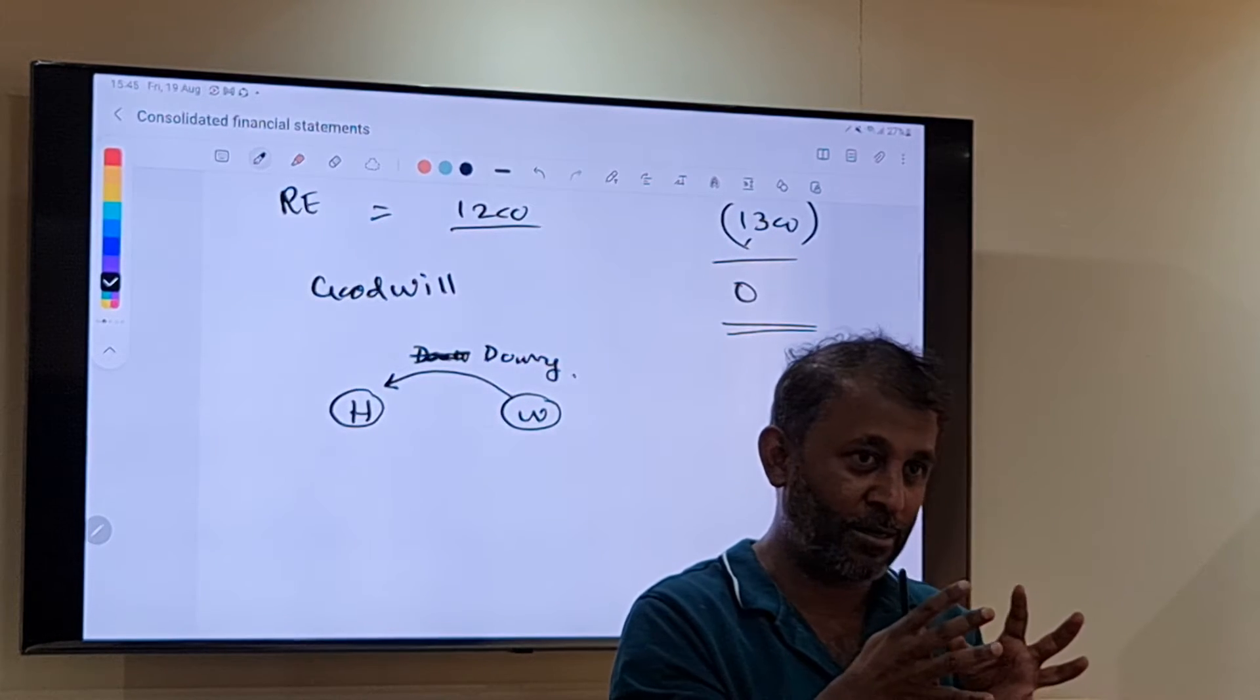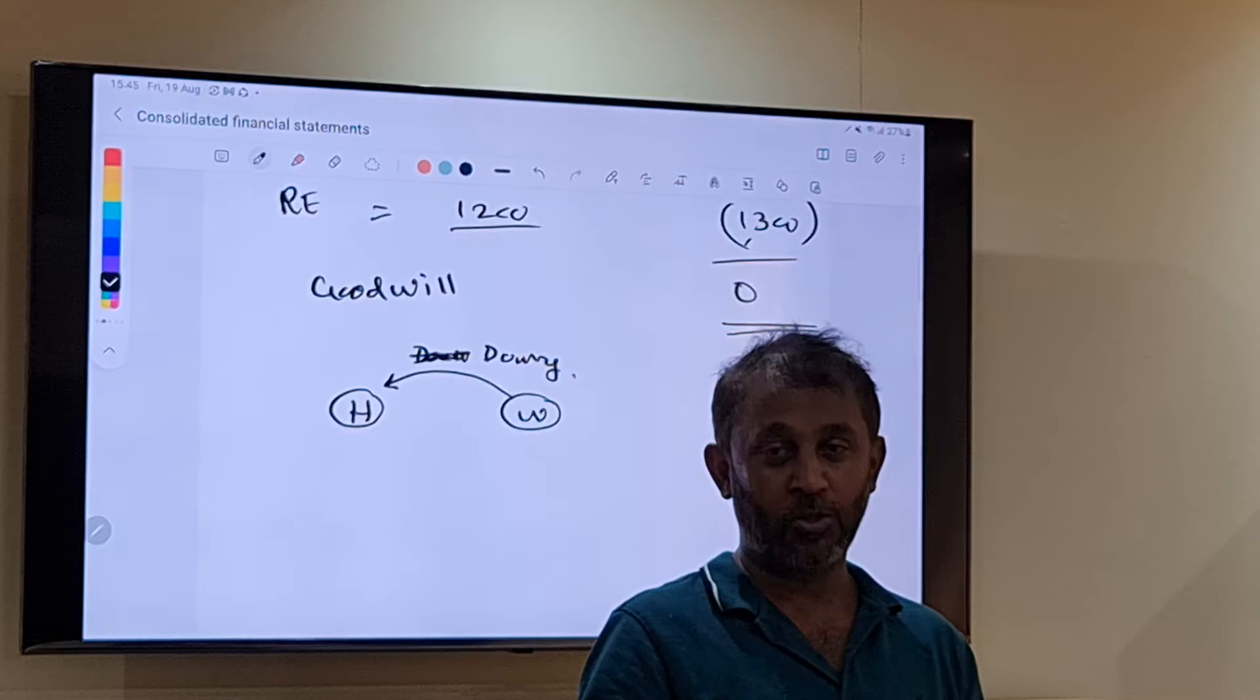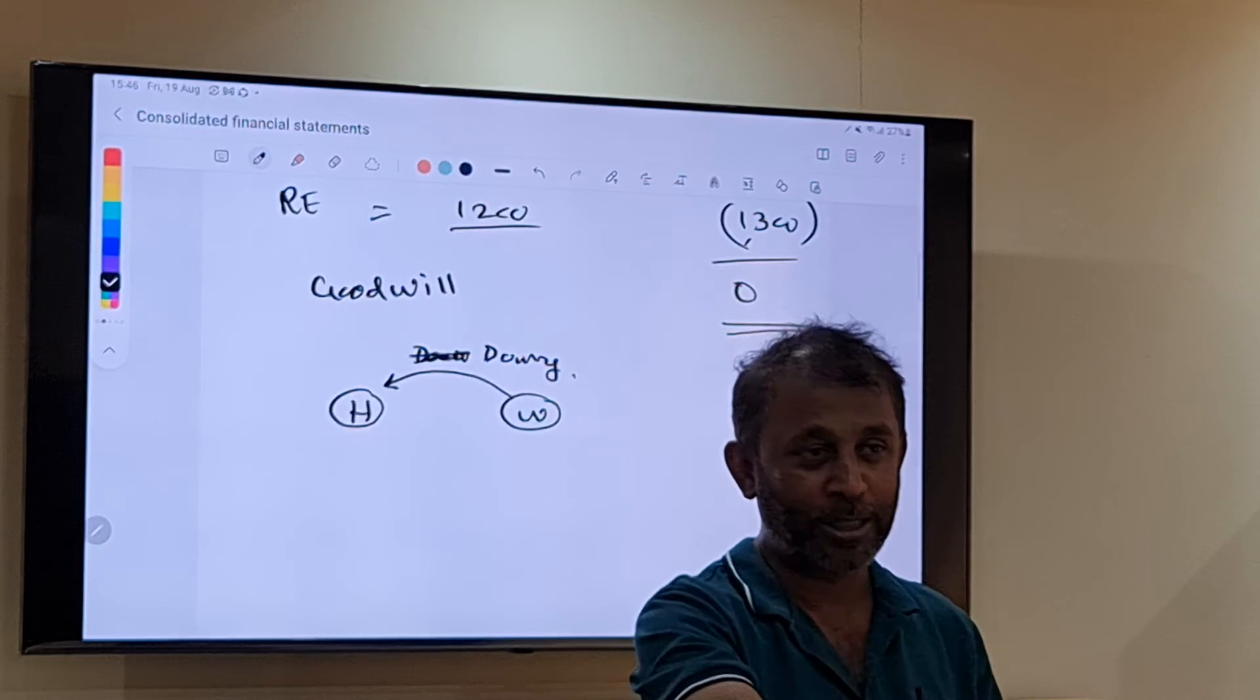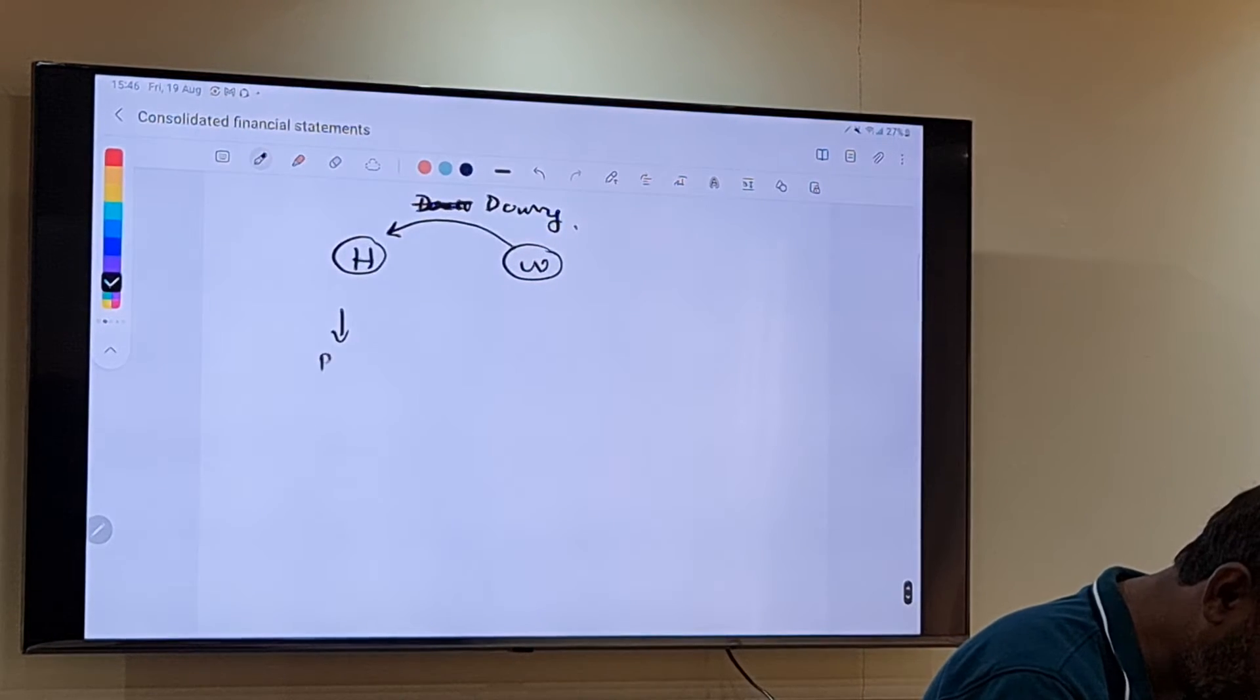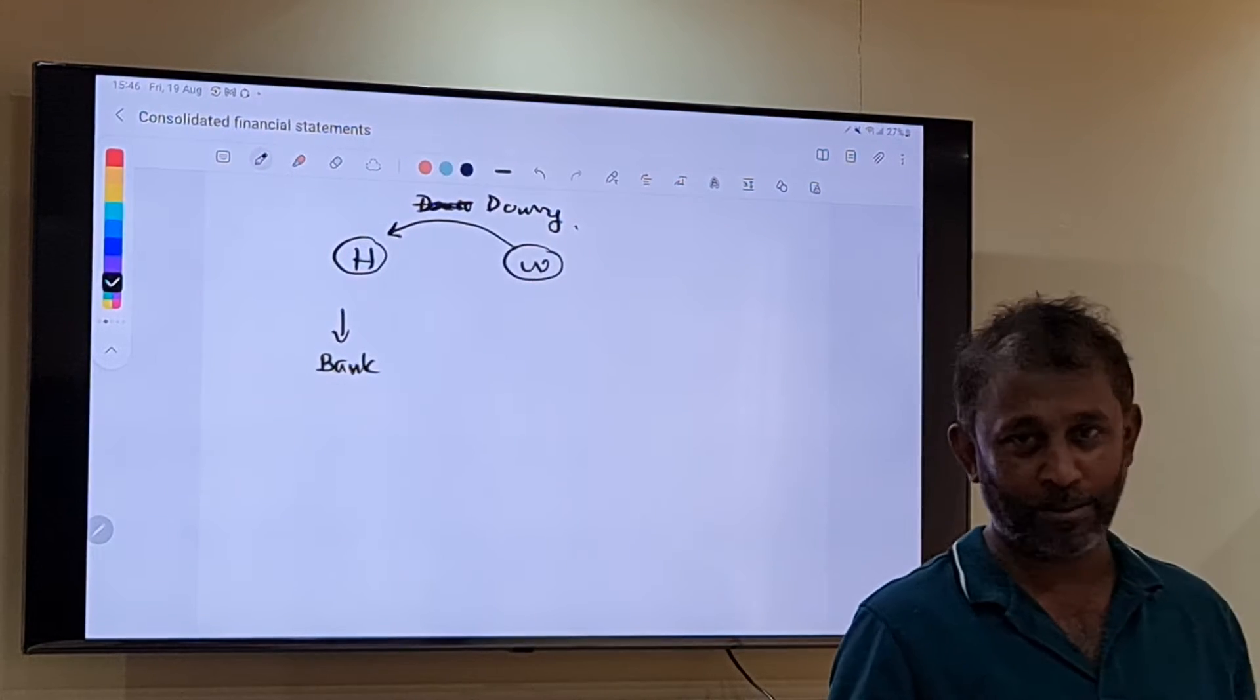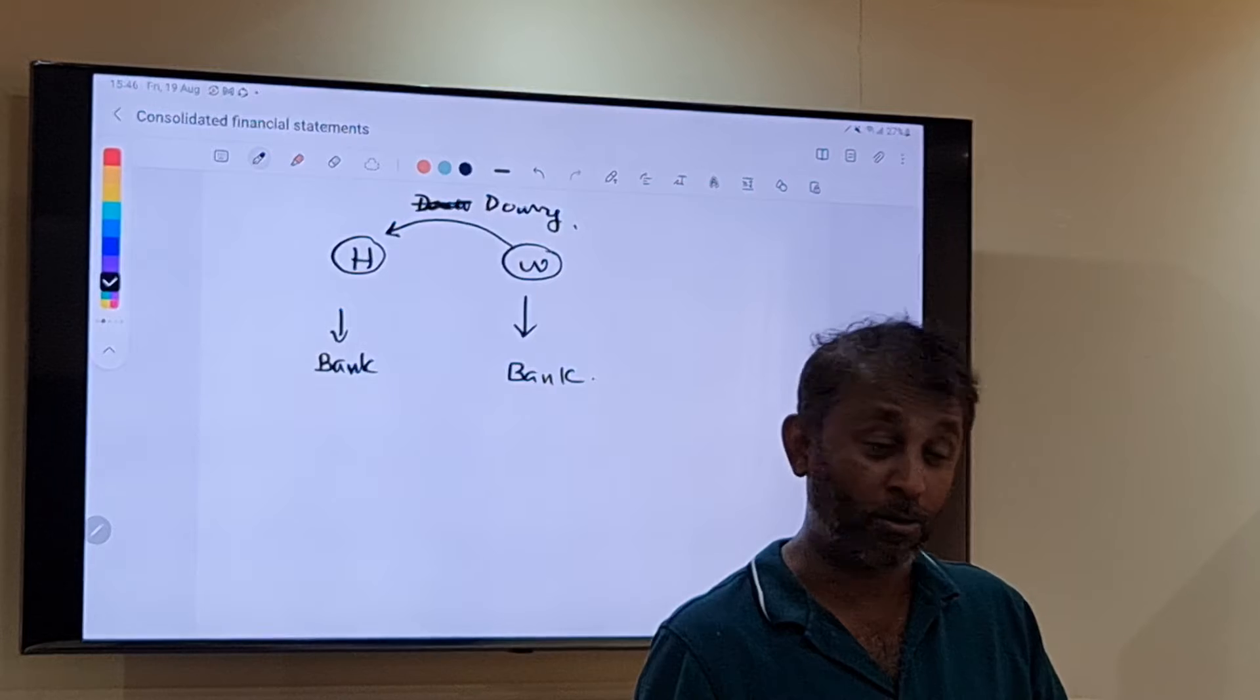So now when we talk about this parent subsidiary arrangement, the parent is investing in the subsidiary. The parent is something like bride, subsidiary is something like husband. Now husband has a bank account when he is doing business or work. Wives also have a bank account, she may or may not have.